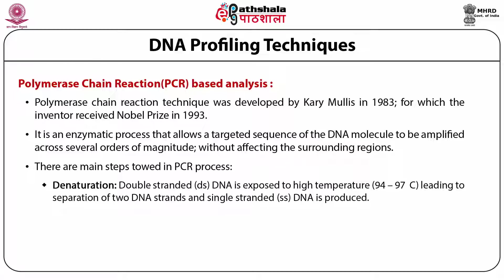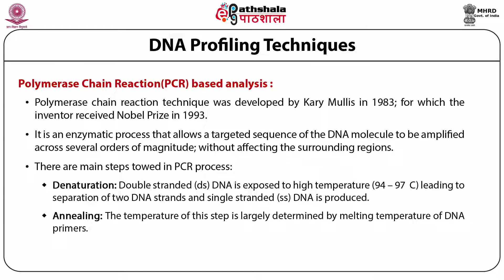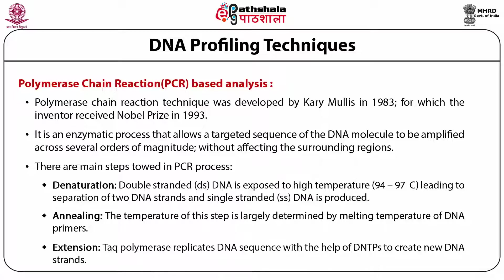There are three main steps involved in the PCR process. First is denaturation, where double-stranded DNA is exposed to high temperature, leading to separation of the two DNA strands and production of single-stranded DNA. The next step is annealing. In this step, the temperature is largely determined by the melting temperature of DNA primers. Primers are basically oligonucleotide sequences complementary to the 3' end of both sense and antisense DNA strands. Primers bind to the DNA template strand at a specific site and form stable DNA-DNA hydrogen bonds as a result of complementary base pairing. Two different primers define the endpoints of a particular targeted sequence that is to be amplified. The last step of PCR is extension, where Taq polymerase replicates the DNA sequence with the help of dNTPs to create new DNA strands.